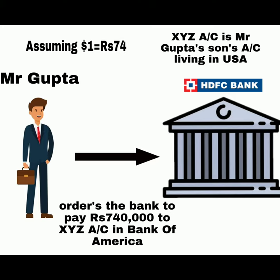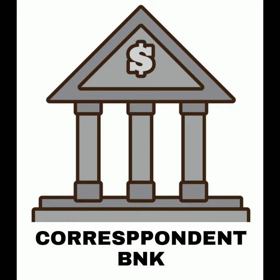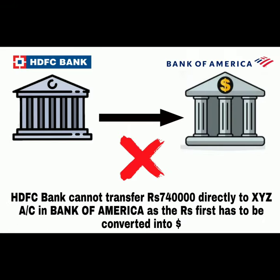As Mr. Gupta has an account in HDFC Bank, he goes to HDFC Bank and orders the bank to pay Rs. 7,40,000 — assuming that the rate of dollar is Rs. 74 — to XYZ account in Bank of America, assuming that his son has an account in Bank of America. Here is where the correspondent bank comes into play. Now what will HDFC Bank do? As they cannot transfer directly Rs. 7,40,000 into Bank of America because it first has to be converted into dollars.